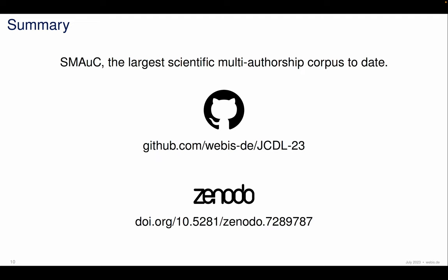You can find all the code we used and some documentation on our GitHub, and the dataset itself can be found on Zenodo. All the information contained in this dataset is public information, but since authorship datasets are always a bit sensitive, we thought it best to grant access only on request. If you want to use it for academic purposes, you can request access to the dataset — no problem. If you have any further questions, feel free to contact us. Webis.de is our web address, and otherwise I thank you for your attention.